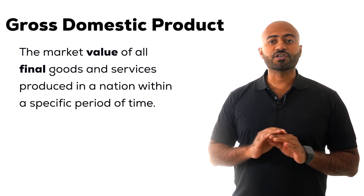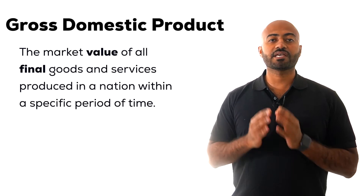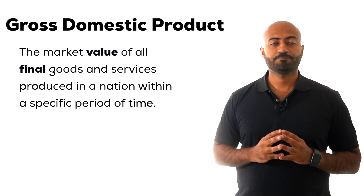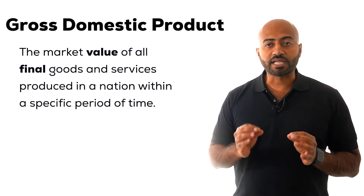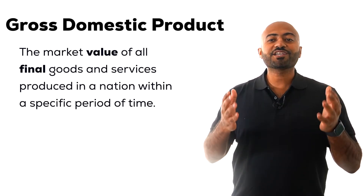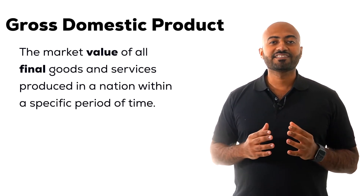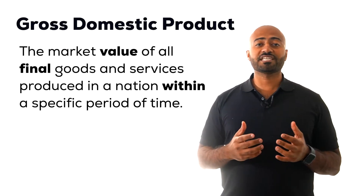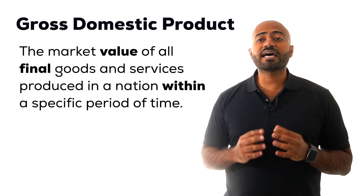Think about it this way: consider your reaction if GMC tried to sell you a truck without tires — you'd be willing to pay less for that truck. This illustrates why the value of the tires is embedded in the final product. That is the third thing to keep in mind about GDP: it measures activity within an economy.